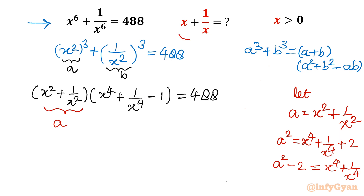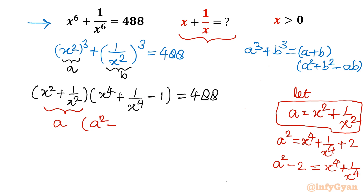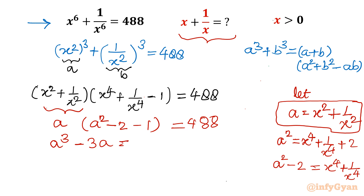Substituting into our equation: x⁴ + 1/x⁴ becomes a² − 2, so the expression inside the brackets becomes (a² − 2) − 1 = a² − 3. The equation becomes a(a² − 3) = 488. Expanding: a³ − 3a = 488.